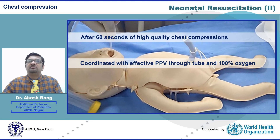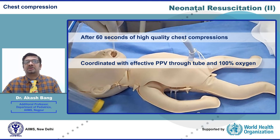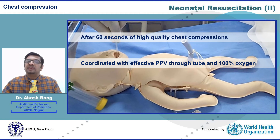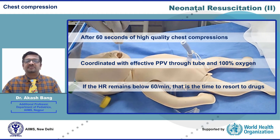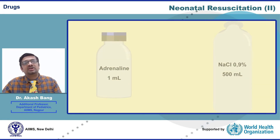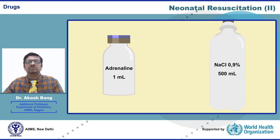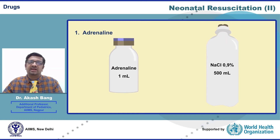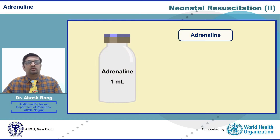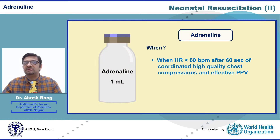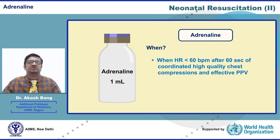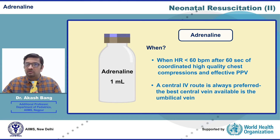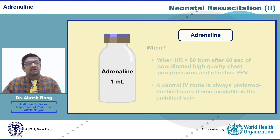Even after 60 seconds of high-quality chest compressions coordinated with effective PPV through an endotracheal tube with 100% oxygen, if the heart rate remains below 60 per minute, that is the time to resort to drugs. You need to keep in mind only two drugs: adrenaline and volume expanders. Adrenaline is indicated when the heart rate remains below 60 beats per minute even after 60 seconds of high-quality chest compressions with effective PPV through an endotracheal tube with 100% oxygen. A central IV route is always preferred, and the best central vein available in the neonatal scenario is the umbilical vein.